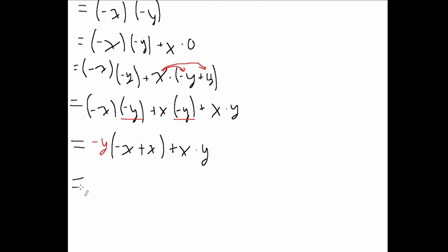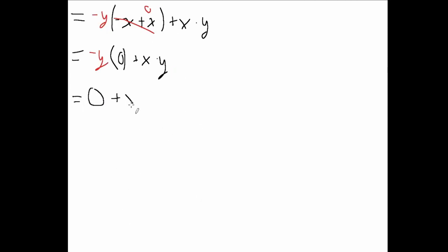And then you can probably see by now that this -x plus x will just evaluate to 0. So then we can write -y multiplied by 0 plus x times y. And obviously any number multiplied by 0 will just equal 0. So then we have 0 plus x times y, and this equals just x times y.